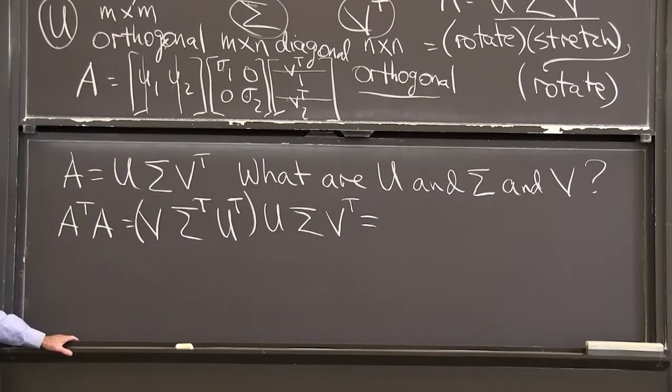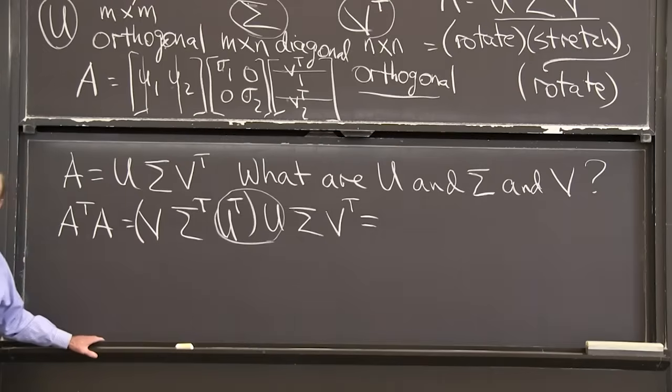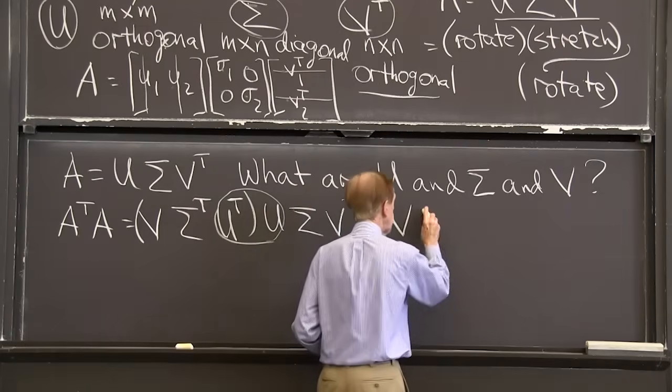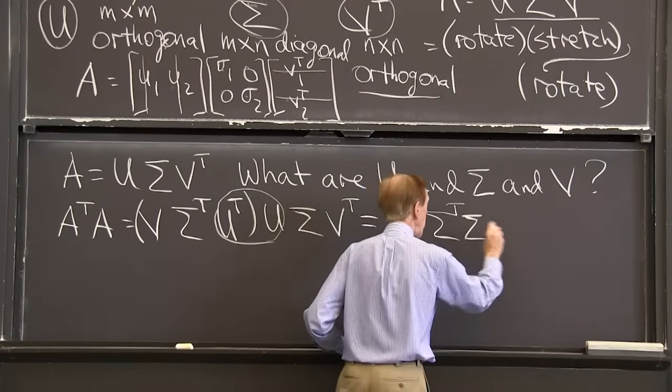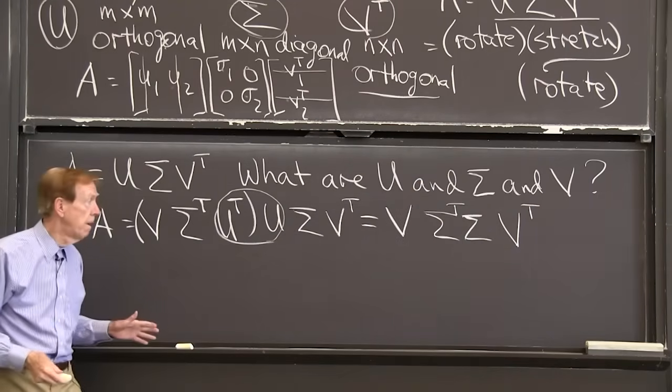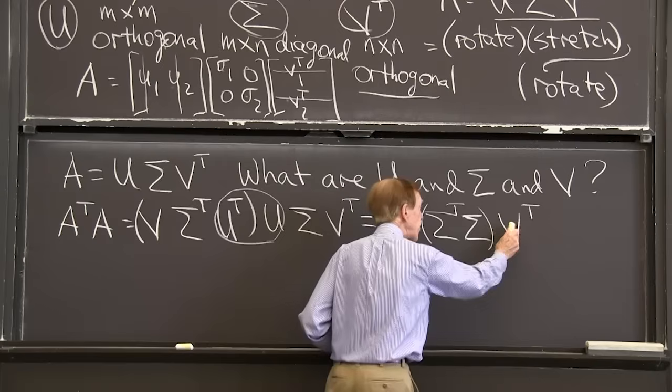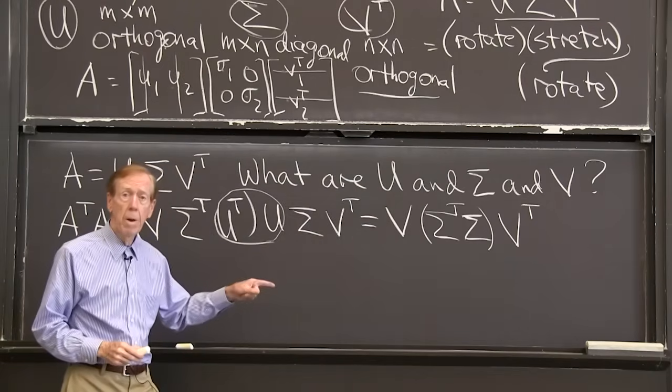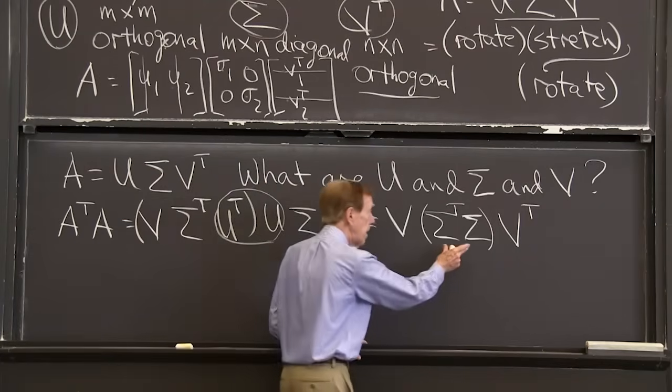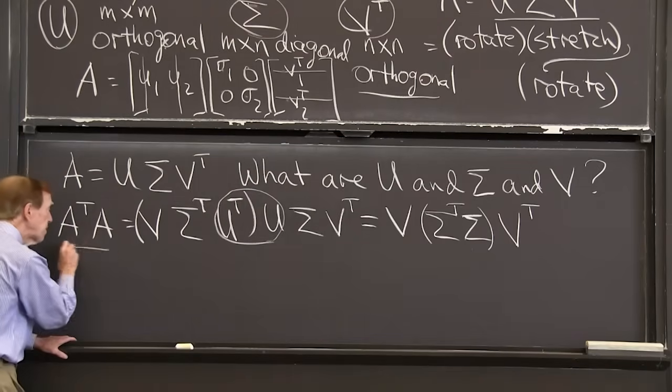I've got six matrices, but U transpose U in here is the identity because U is an orthogonal matrix. So I really have just the V on one side, a sigma transpose sigma that'll be diagonal, and a V transpose on the right. This I recognize. Here is a single V, a diagonal matrix, a V transpose. What we reached is the eigenvalue decomposition. The usual eigenvalues are in here and the eigenvectors are in here, but the matrix is A transpose A.